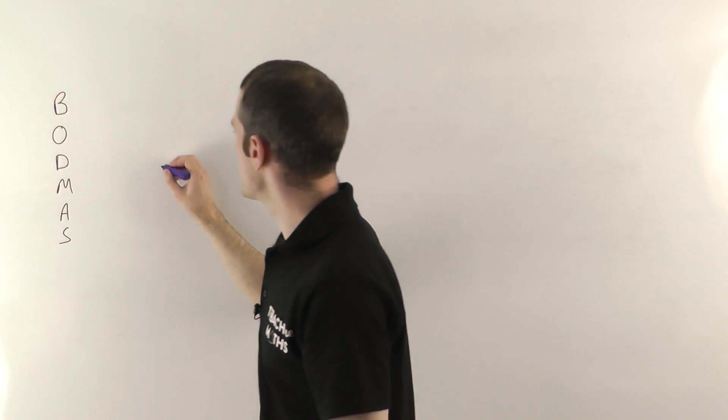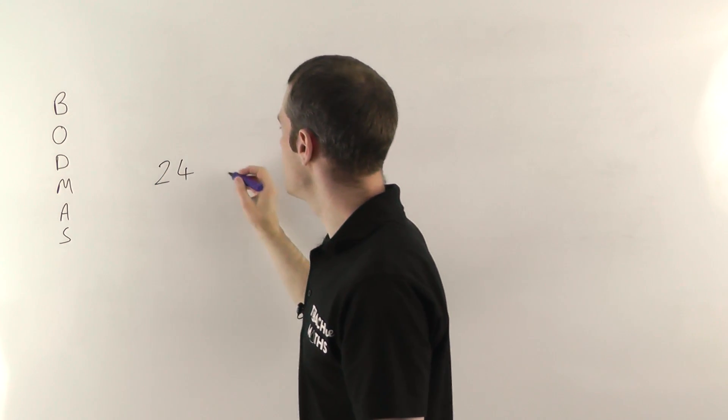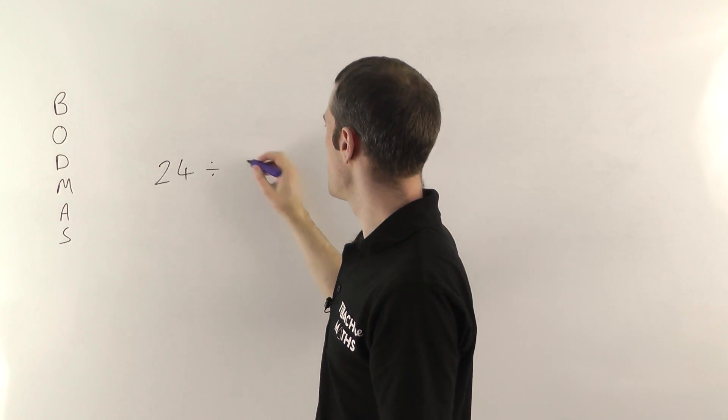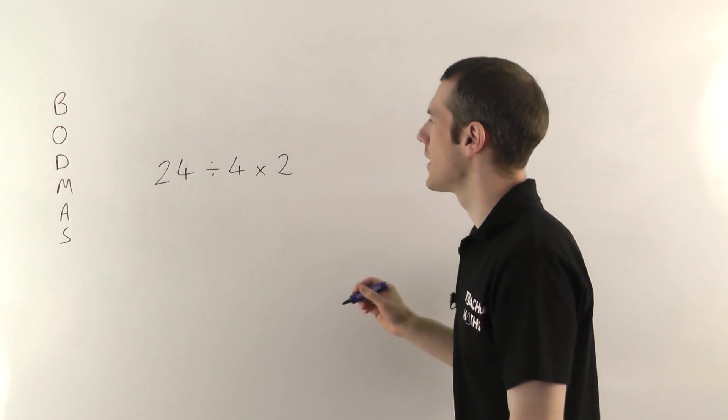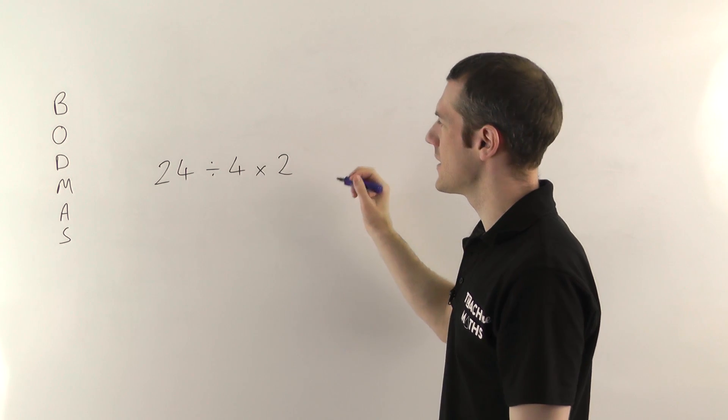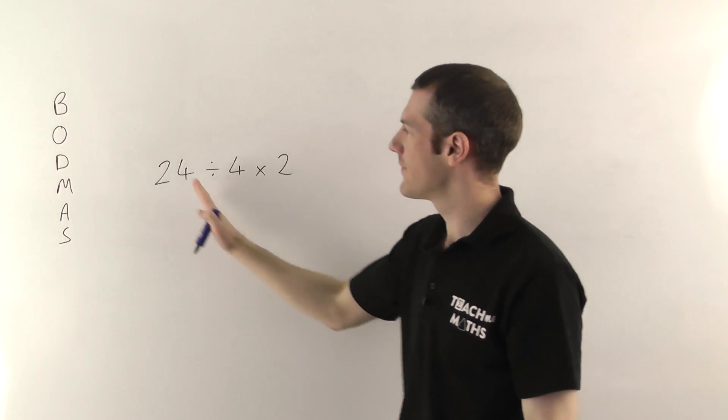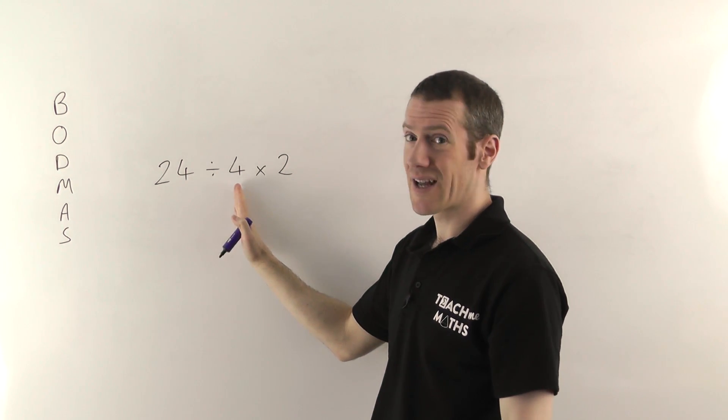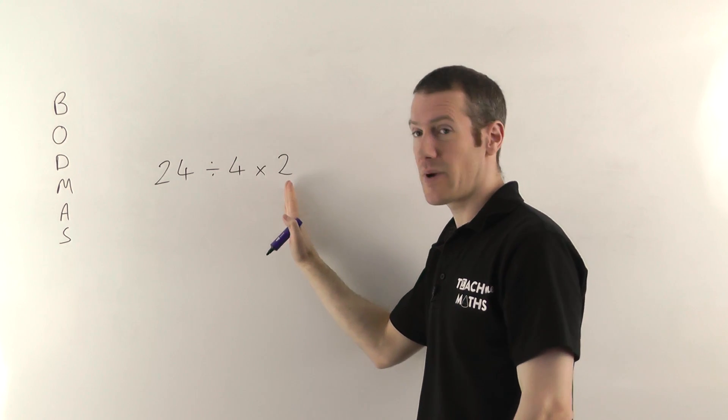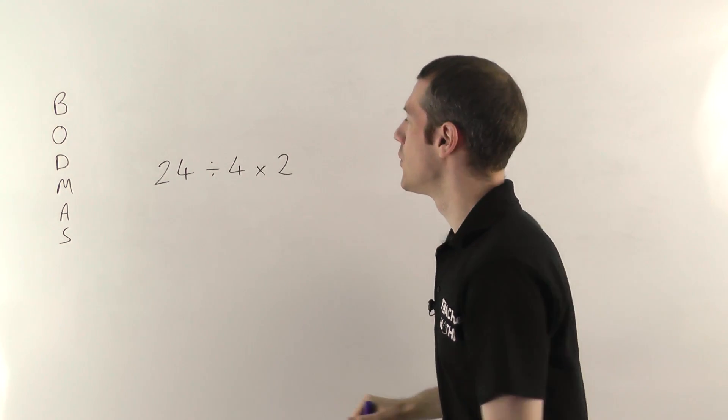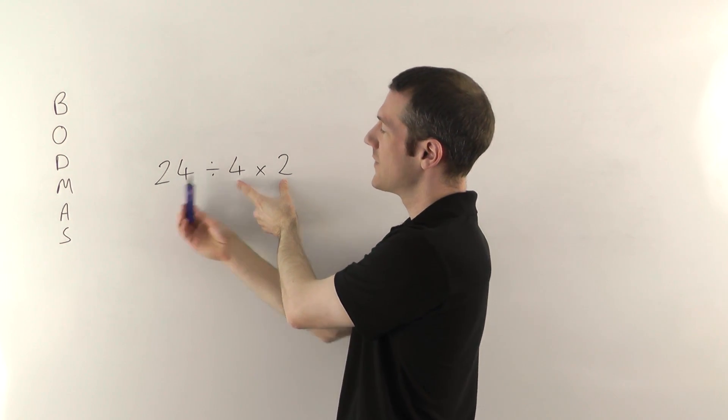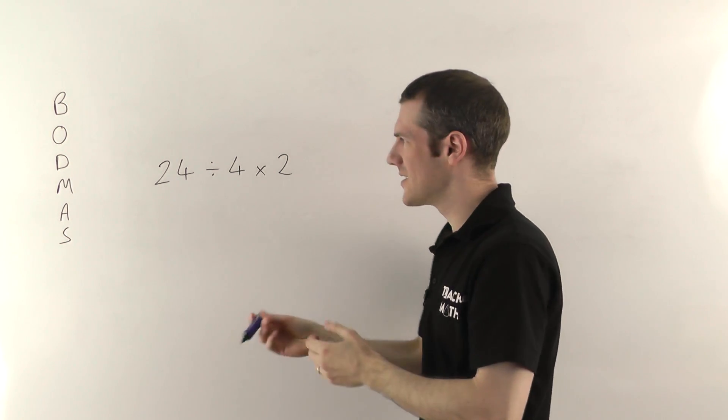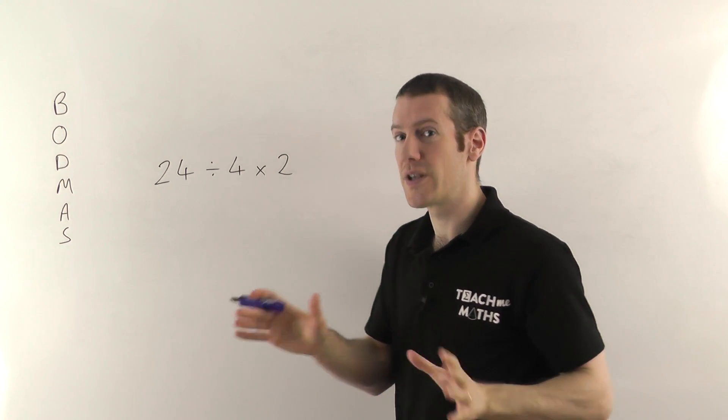So if we started with 24 divided by 4 times 2. Now if I work this out, I might have, if I did 24 divided by 4 I'm going to get 6 and then times it by 2 that gives me 12. Or if I worked out the 4 times 2, which gives me 8 and then did 24 divided by the 8, I'm going to get 3.